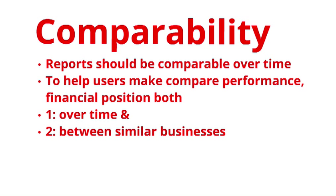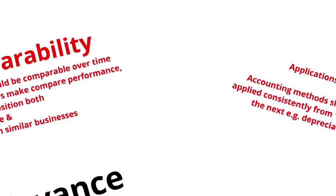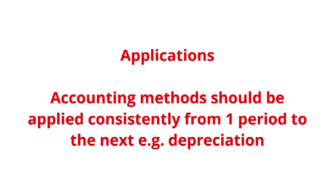Comparability: reports must be comparable over time so that stakeholders can compare performance via the income statement and financial position via the balance sheet — not only over time for the same business to identify historical trends, but also to similar businesses in the same industry. We must use the same accounting method; for example, if we start with reducing balance depreciation, we can't simply switch to straight-line to maintain higher expenses, which would reduce profit and reduce tax payable. Altering methods this way would be a breach of the comparability QC.